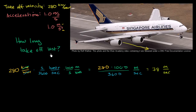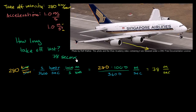But how long will takeoff last? We can reason through this intuitively. The acceleration is 1 meter per second per second, meaning after every second it's going 1 meter per second faster. Starting at a velocity of 0: after 1 second it's going 1 m/s, after 2 seconds 2 m/s, after 3 seconds 3 m/s. So how long to reach 78 meters per second? It will take 78 seconds — roughly a minute and 18 seconds.